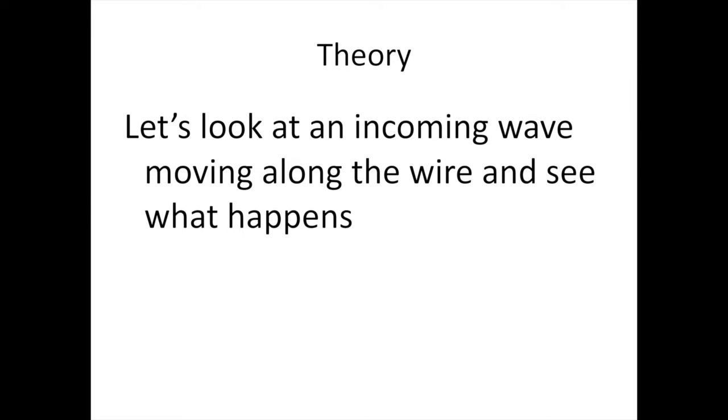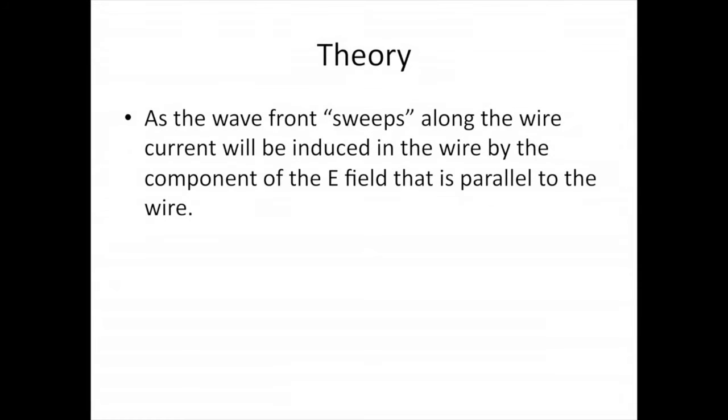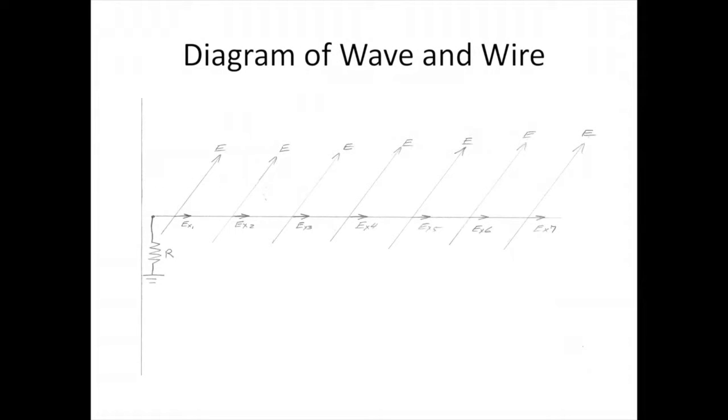Let's look at an incoming wave moving along the wire and see what happens. This is a diagram of a waveform with a tilted electric field sweeping down the beverage wire. If the wave front sweeps along the wire, current will be induced in the wire by the component of the E field that is parallel to the wire. Now what we are looking at in this diagram is the tangential component of the E field: EX1 plus EX2 plus EX3 plus EX4 and so on. These induced currents add up and they are traveling down the wire slower than the actual E field is sweeping the wire.